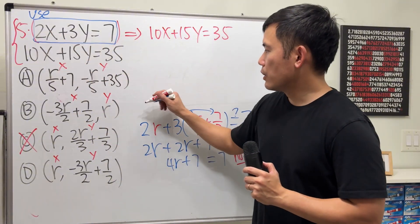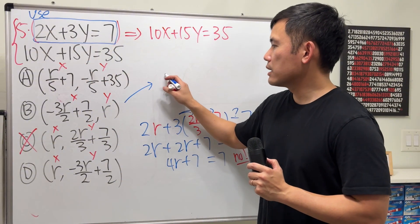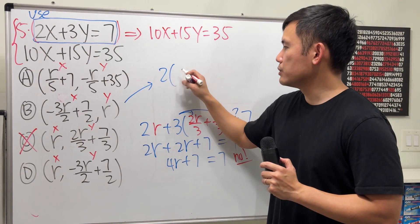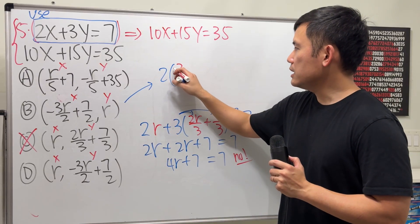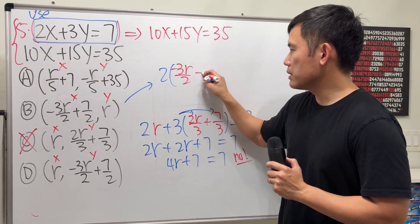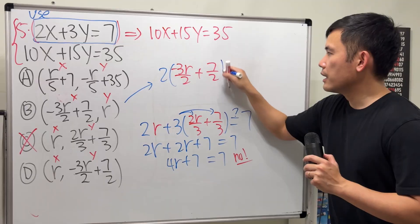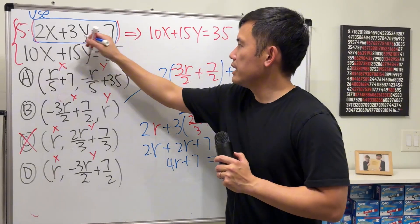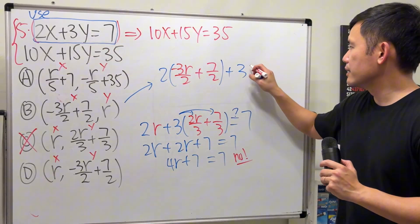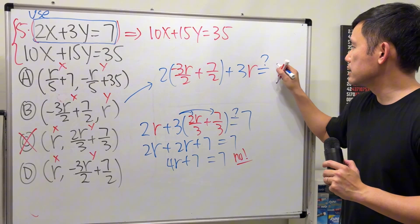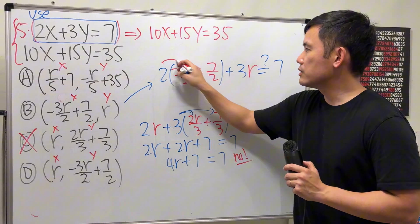Plugging this into the x. So, right here, we are getting 2 times x, which is that. Negative 3r over 2 plus 7 over 2 plus 3 and the y is the r. And do we end up with 7? Distribute the 2.